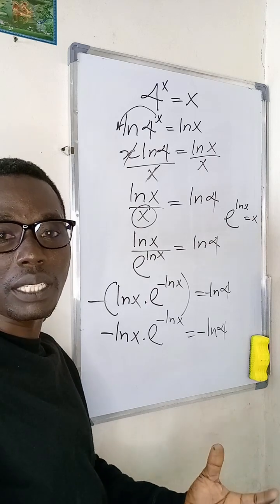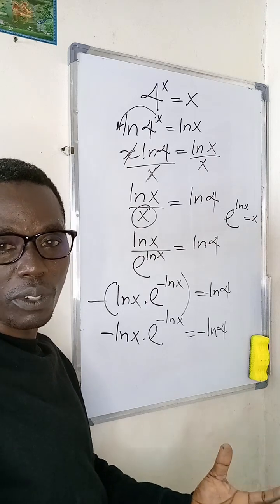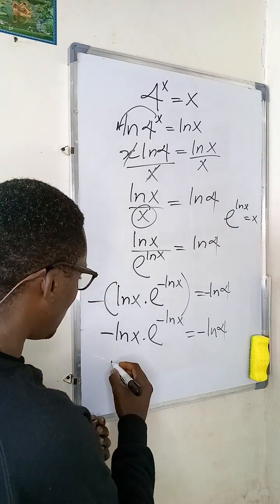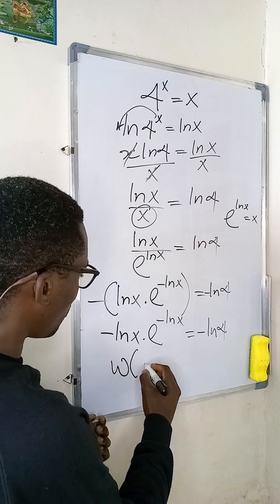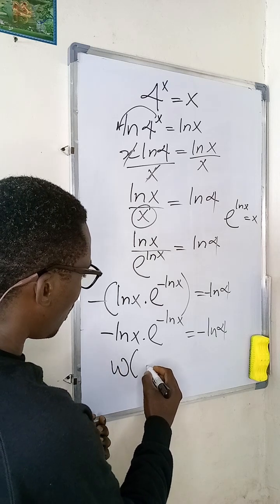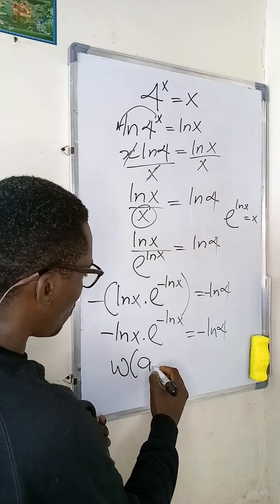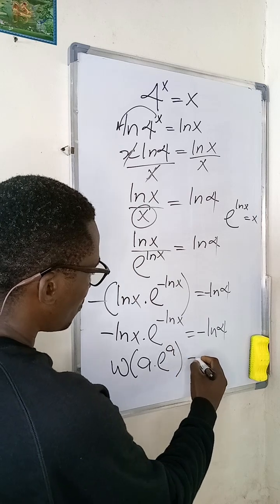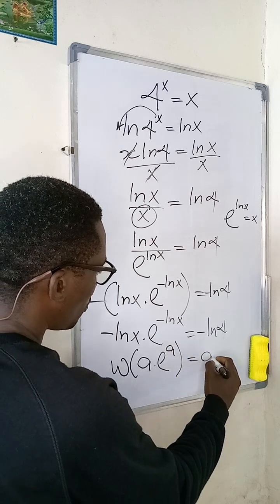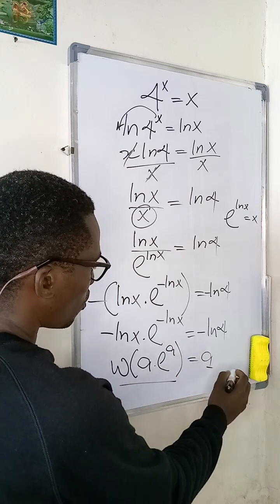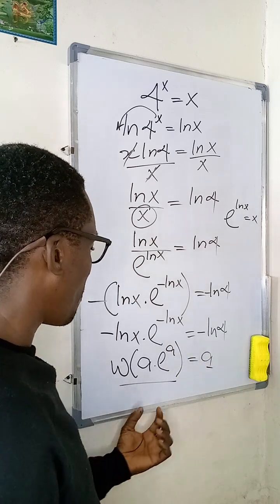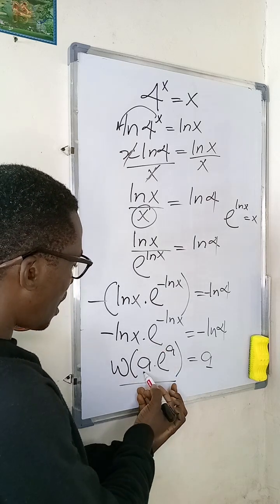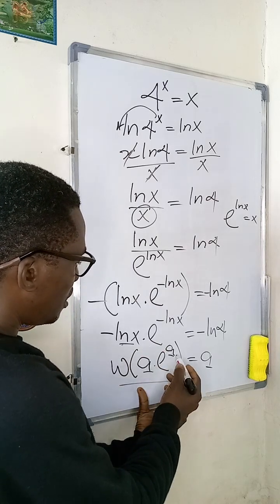What does the Lambert W function say? It says if I have a function of a multiplied by e^a, this equals a. So W(a · e^a) = a. If I can match my expression to this form, I can apply the rule.